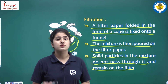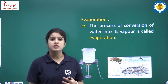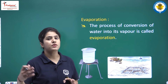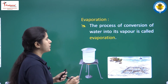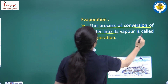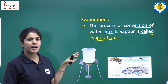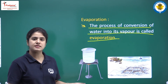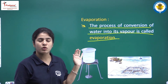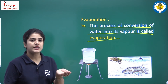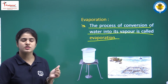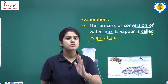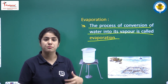Next, we are going to discuss a very important process called evaporation. Evaporation is the process in which water is converted into vapors in the presence of sunlight or some heating process. The process of conversion of water into its vapors is called evaporation. For example, if you have water with some sand in it and you heat it up, the water will get converted into vapor and vaporize, and you will be left with sand in the beaker.